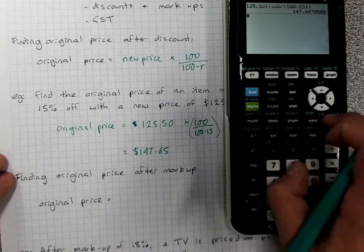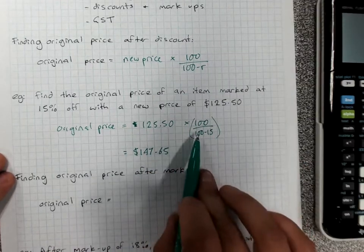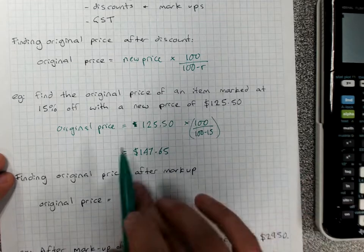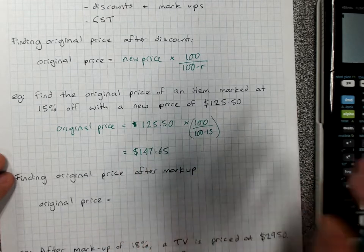It would have been much easier to just do that's 85, so $125.50 times 100 over 85.